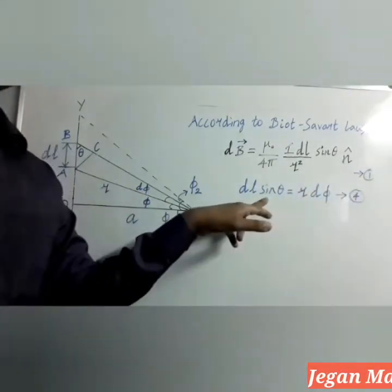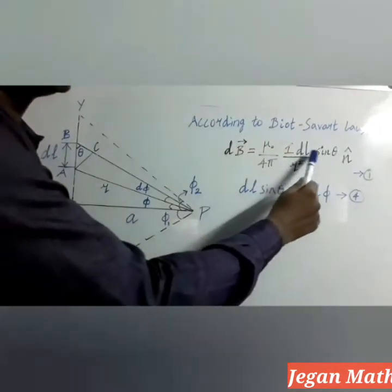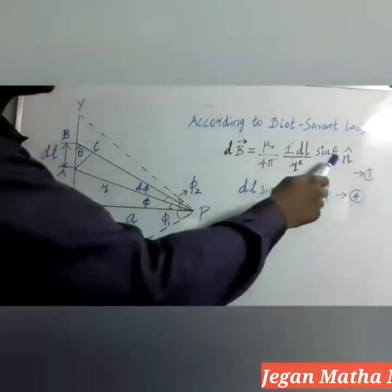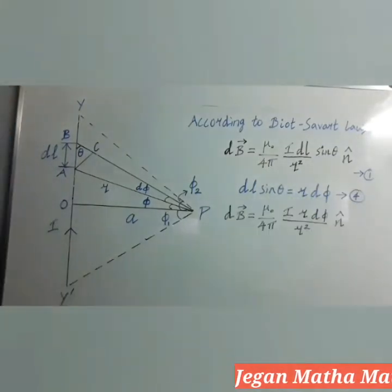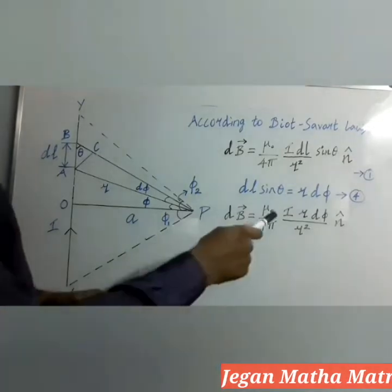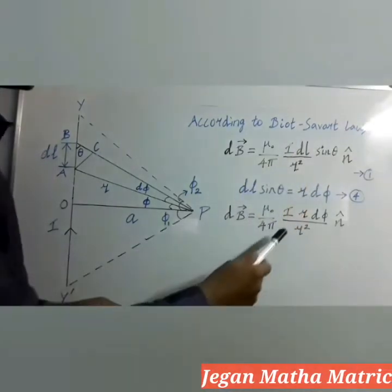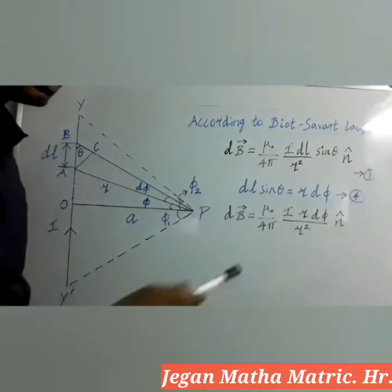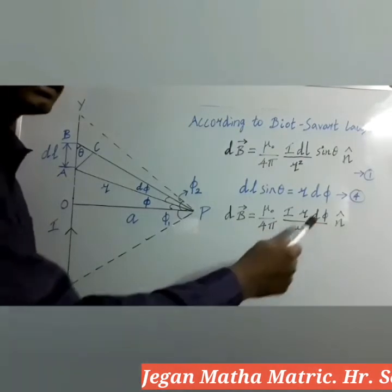This fourth equation can be substituted in the first equation. DL sinθ is there; according to the fourth equation, DL sinθ can be written as R·dΦ. Here, another form of the first equation is written — R·dΦ is substituted in the place of DL sinθ. At the numerator R is there, at the denominator R² is there, so both can be cancelled, leaving only R at the denominator.